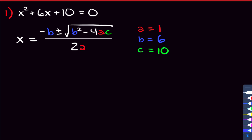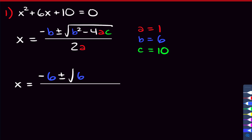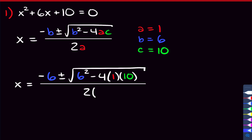And c is the number without an x, so that's going to be 10. Now that we have our a, b, and c, we can plug into the quadratic formula. So we get that x is equal to negative b, which is positive 6, plus or minus the square root of b squared — that's 6 squared — minus 4 times a, which is 1, times c, which is 10. And that's all over 2 times a, and a is 1.